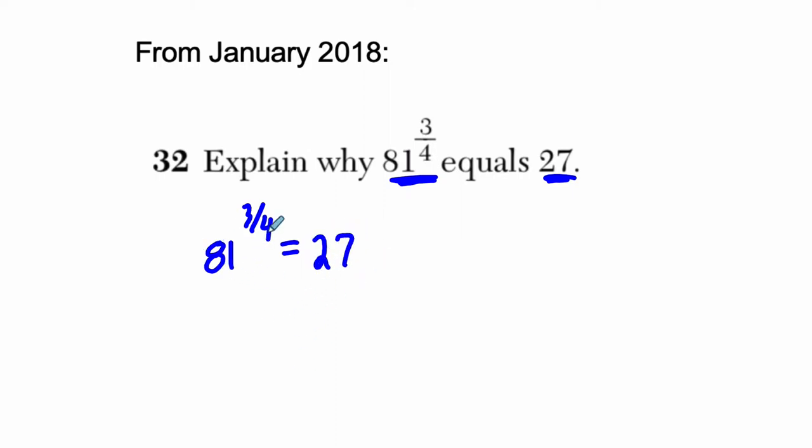How would I explain this? Well, I would just rewrite what's happening over here. 3 over 4 is equivalent to 1 fourth times 3. If you think about this, I'm using a law of exponents right here. When you have exponents like this next to each other in parentheses, you multiply them.